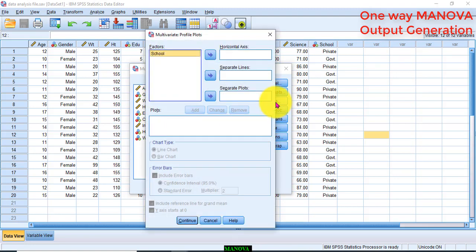Click on Plots. Transfer the school as horizontal axis. Click Add. Continue.